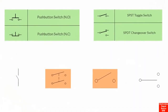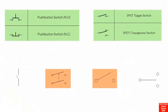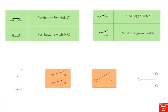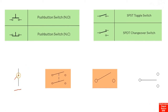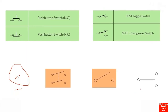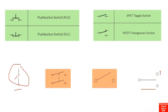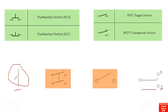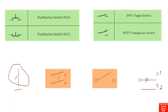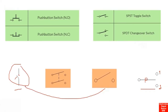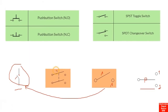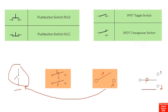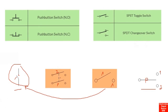Now let's look at some switch symbols. This first switch is a normal switch — a single pole single throw (SPST). Here we have a single pole double throw (SPDT) switch with two throw options. This is a double pole double throw (DPDT) switch because it has two poles and two throws.